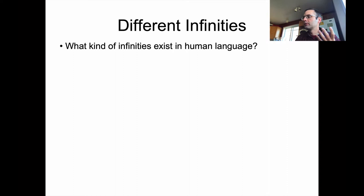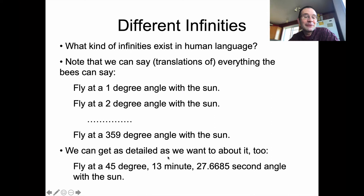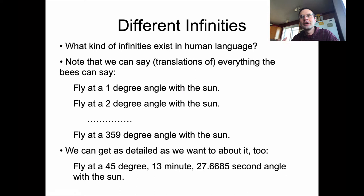We can compare that to the creativity we have in human language. Without dancing, we could say translations of everything the bees can say — 'fly at a one-degree angle with the sun' — and put those instructions into a navigator. We can get more detailed than bees probably can: 'fly at 45 degrees, 13 minutes, 27.6 seconds.' But that's a different ability than the broader grammatical ability we have. Aside from getting specific about numbers, there's a different kind of pattern in human language — we can say things bees cannot.